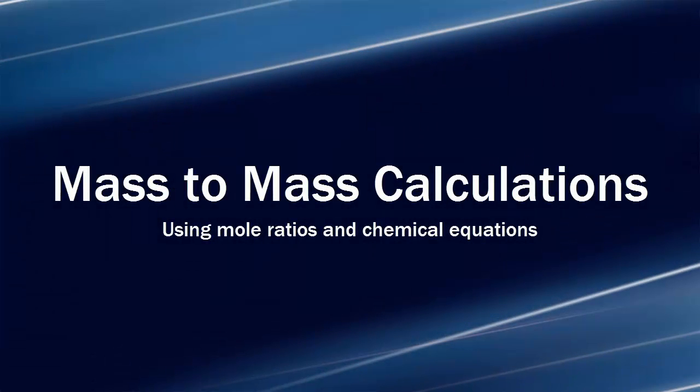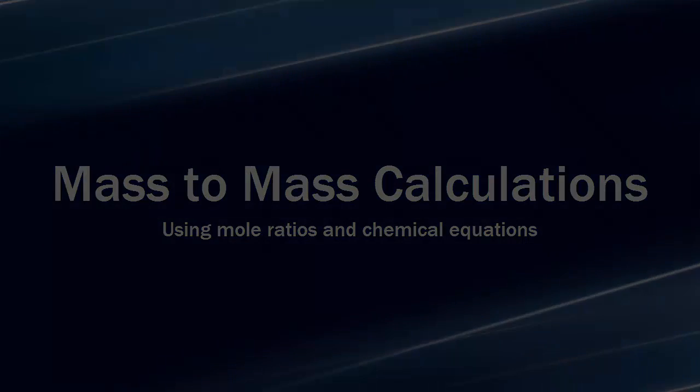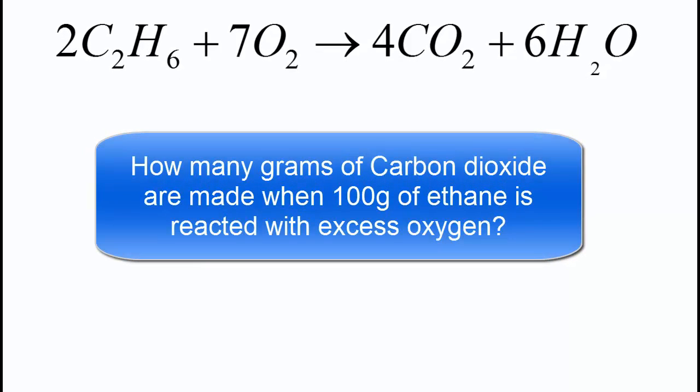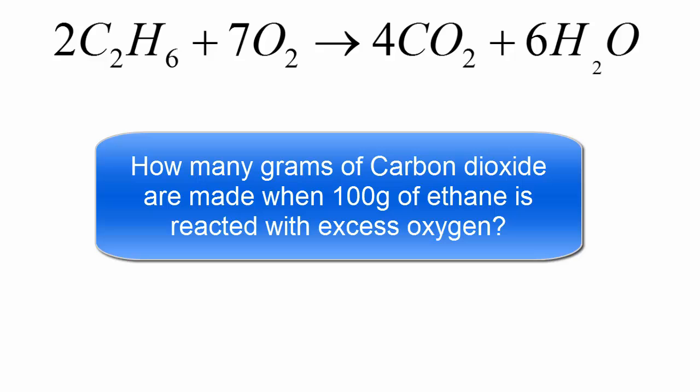This video is about using the mass of a reactant to find the mass of a product using molar ratios and chemical equations. The question is, how many grams of carbon dioxide are made when 100 grams of ethane is reacted with excess oxygen?